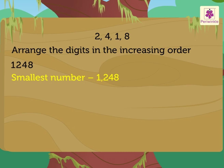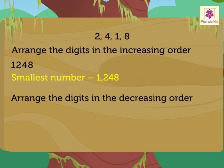Now, to form the greatest number using these digits, we arrange them in decreasing order. So, here we arrange the digits as 8, 4, 2, 1. Thus, we get the greatest number as 8,421.